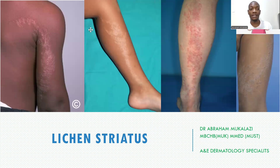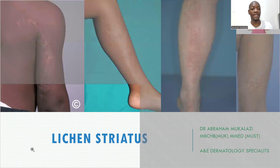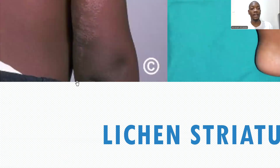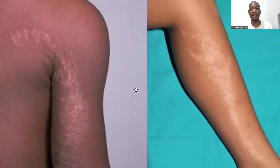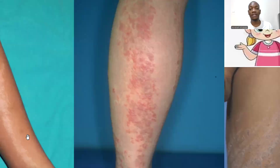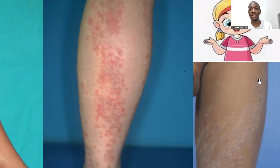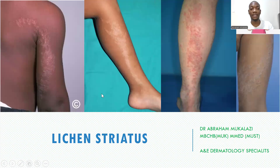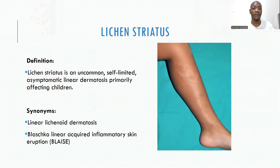Starting from the pictures displayed on screen, we have patients with lesions following a particular pattern on the body — a linear type of distribution, as you can see in these pictures. You may ask yourself: how do we end up here? How does someone get this, and what do we call this? This is what we call lichen striatus. We're going to see the details of how it comes about and how we actually manage it.